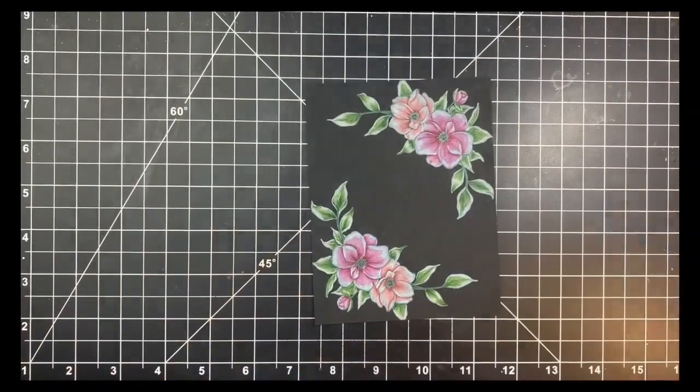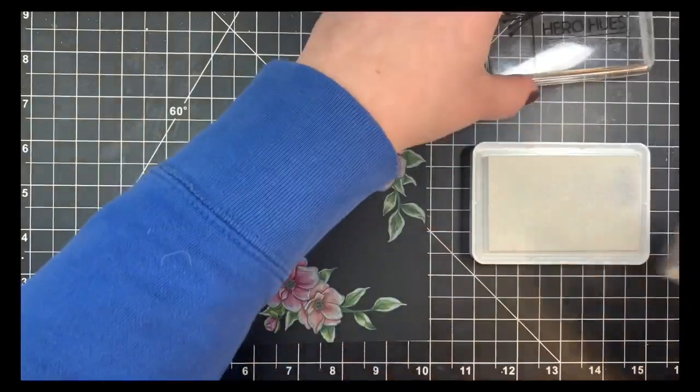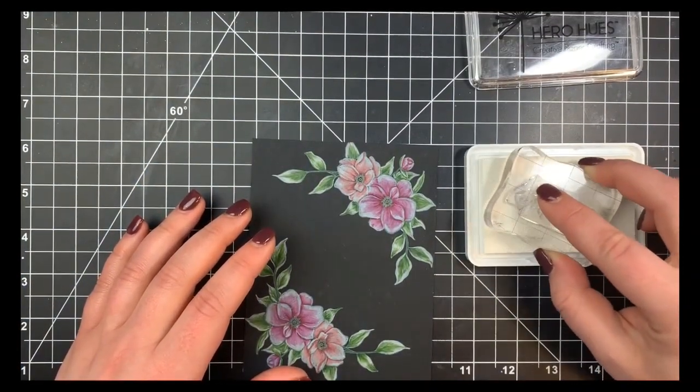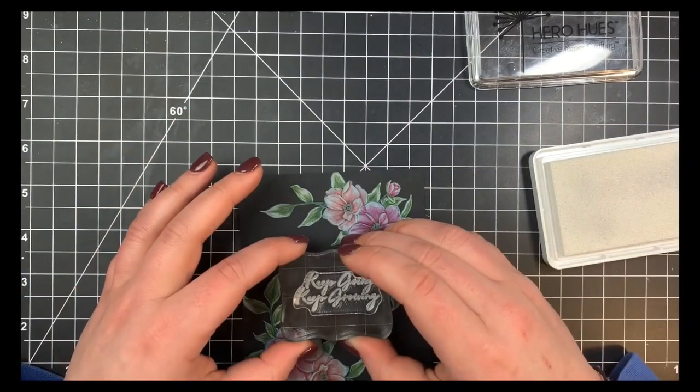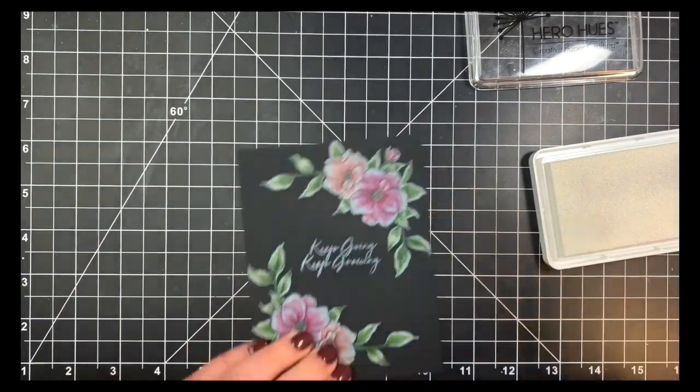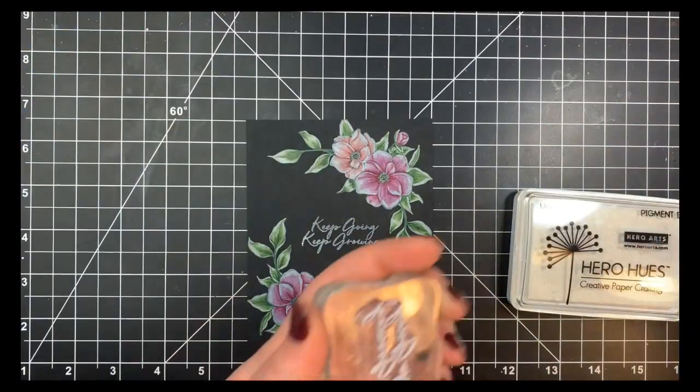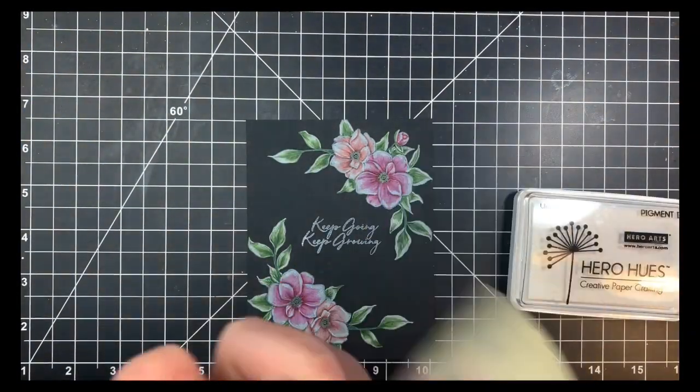So I went ahead and finished up all of that coloring and we're going to go ahead and stamp our sentiment, again just tapping that very lightly onto my ink pad. You'll see that I kind of turned that around to make sure I have good coverage before stamping that right there in the center and now I wanted this to look like a chalkboard.